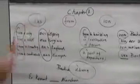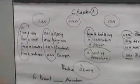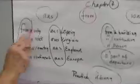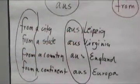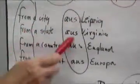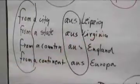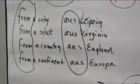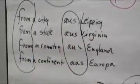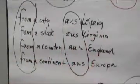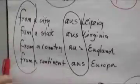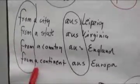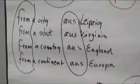Aus — you use it when you say from a city: Aus Leipzig. When you're coming from a state: Aus Virginia. When you're coming from a country: Aus England, from England. When you're coming from a continent: Aus Europa.